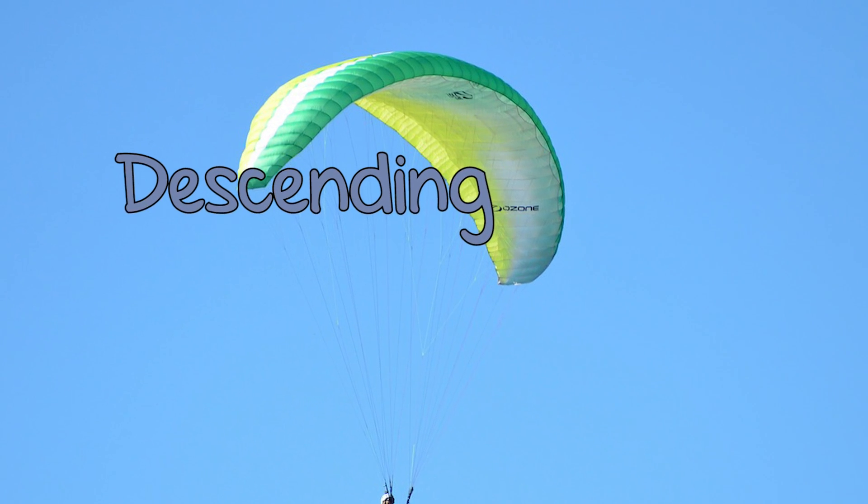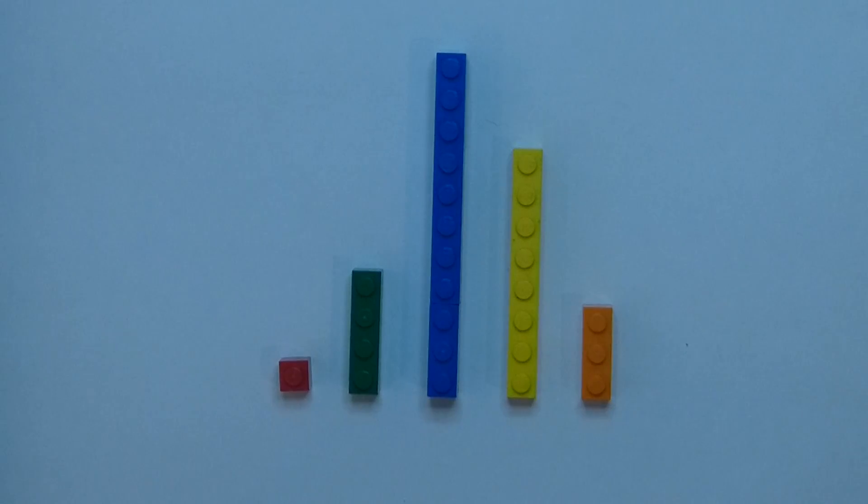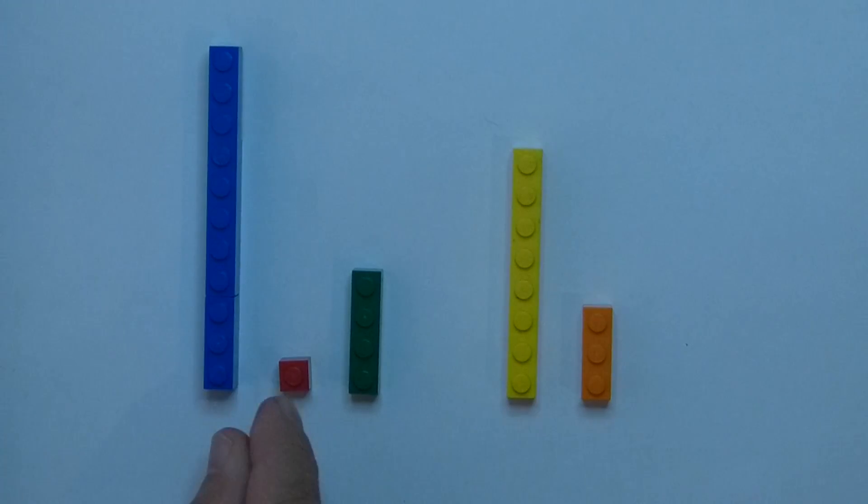But we can also order from highest down to lowest. This is called descending order. Descending is decreasing. Like this.